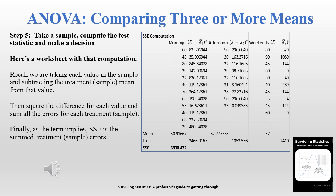Here's a worksheet showing how we compute the SSE. We take each value — starting with morning — subtract the mean of that sample (the morning mean was 50.91667), square it, and do that for each value in morning. We also do it for afternoon using the afternoon mean, and for weekend using the weekend mean. We sum up the squared differences within each group and add all three together, ending up with an SSE of 6930.472.